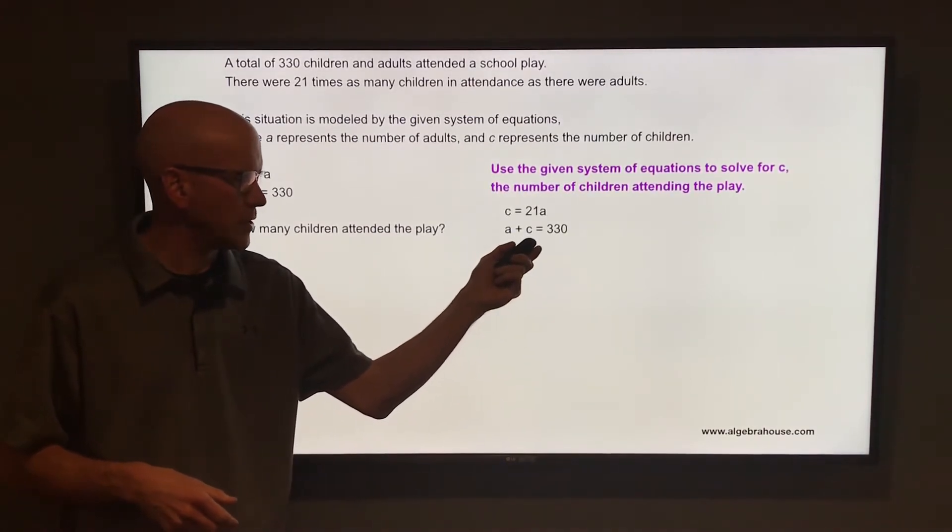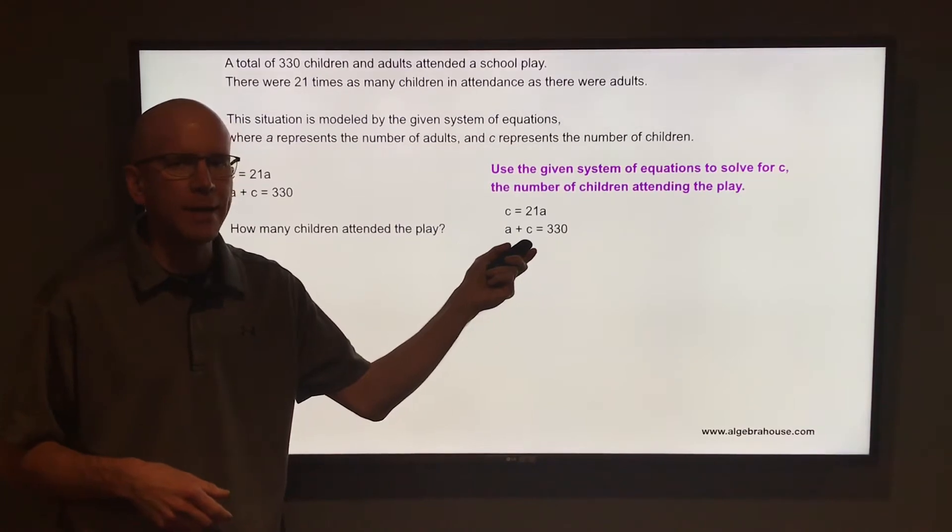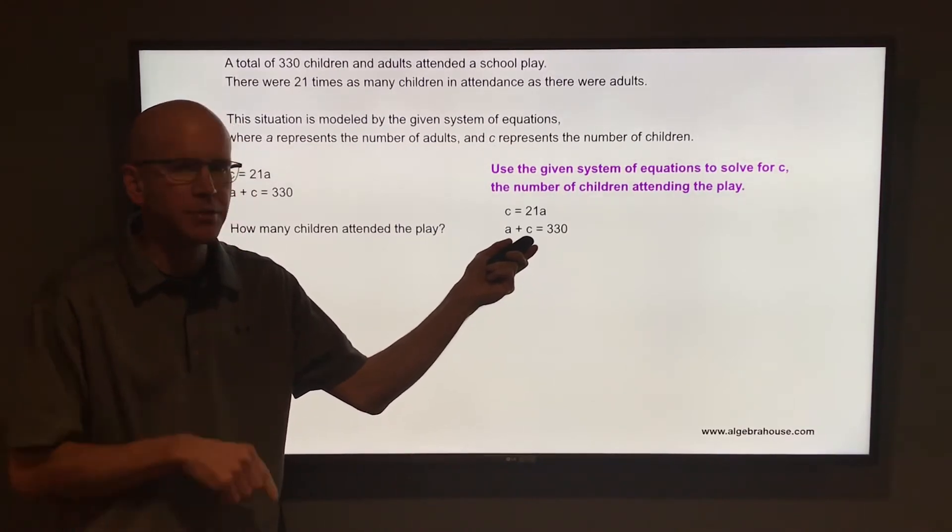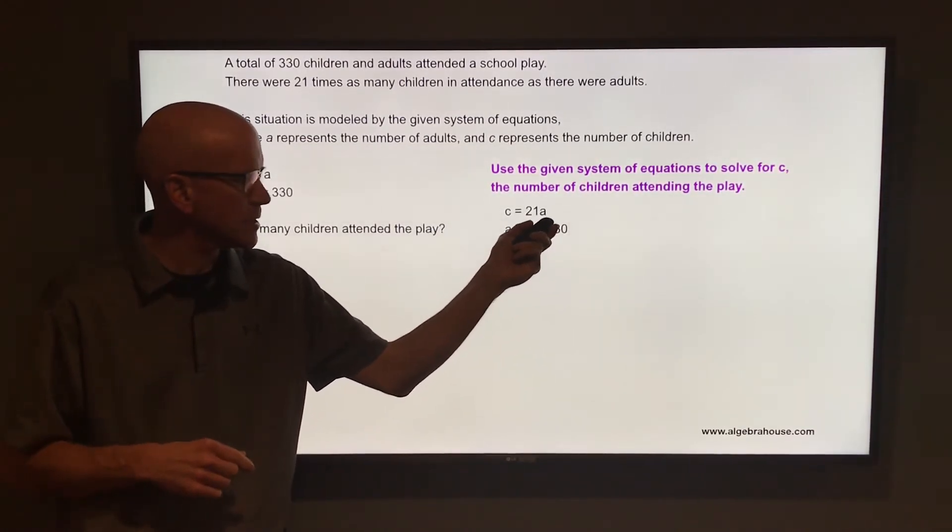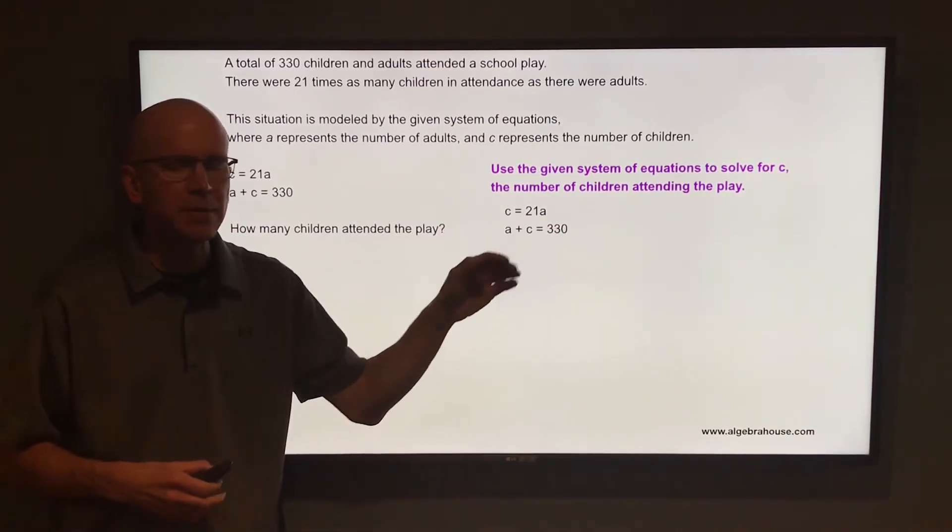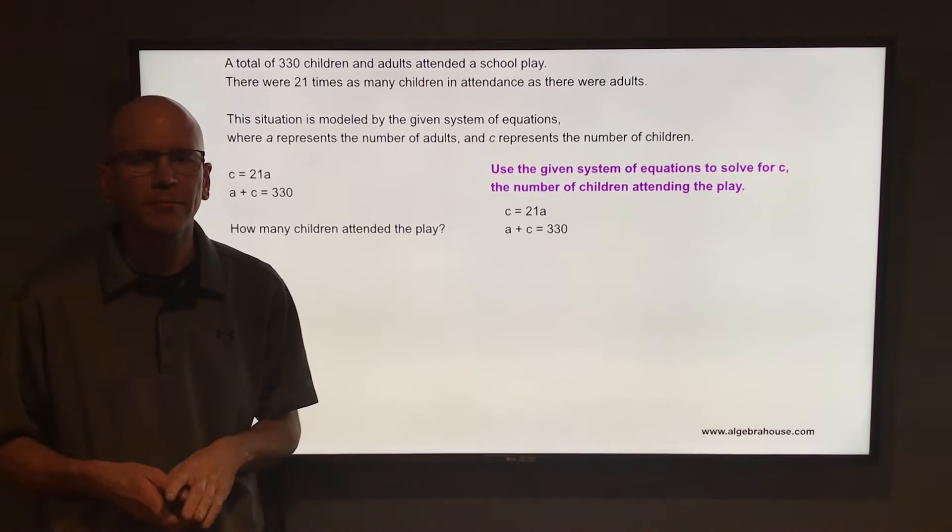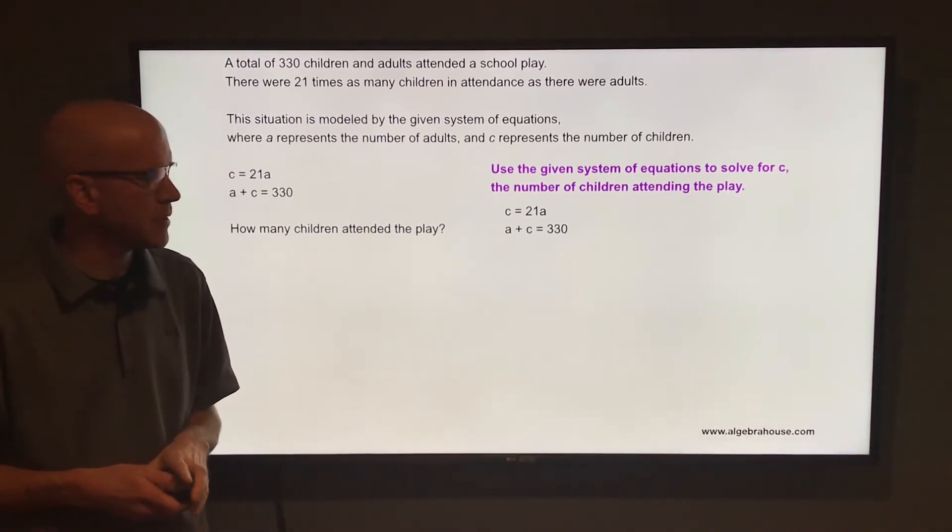We're going to take that second equation and solve for A. Because if we take that second equation and solve for A, you can then substitute into the top equation. And then we'll be able to solve for C, because C really is what we're looking for. We want to find the number of children that attended this play.